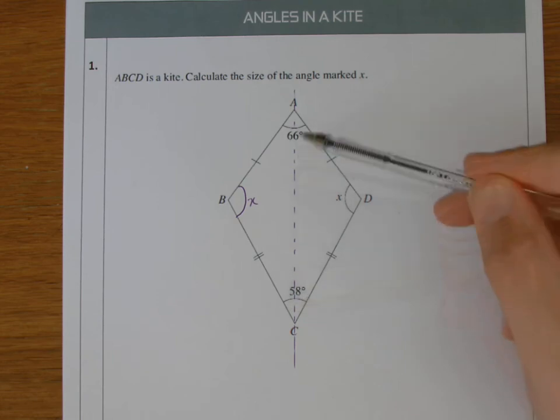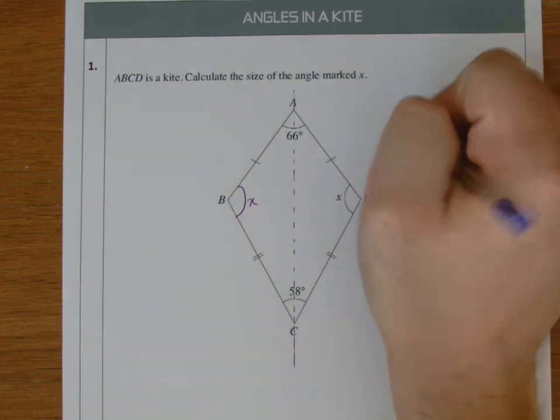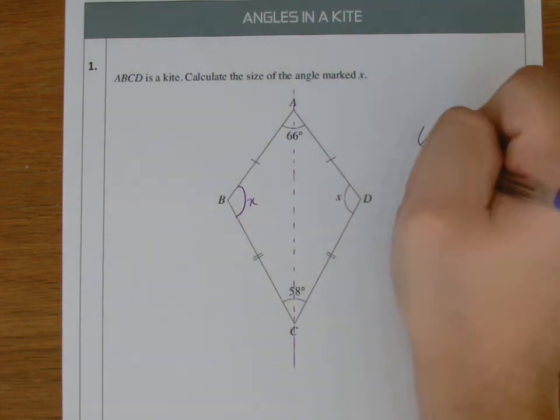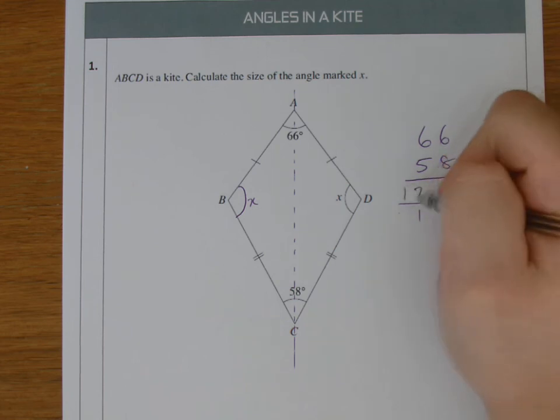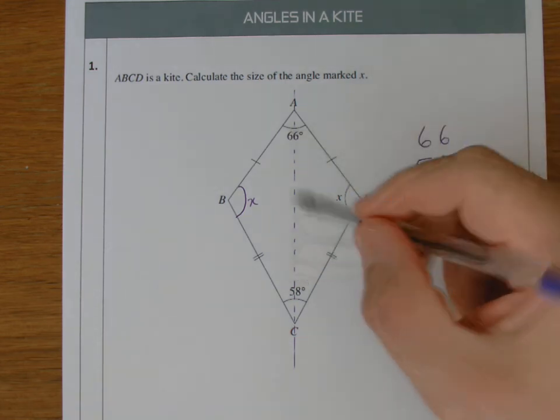But what's good is these two angles here, we can add them up. So add them up: six and eight is 14, four carry one, six and five is 11, plus one is 12. 124. So those two add up to 124.